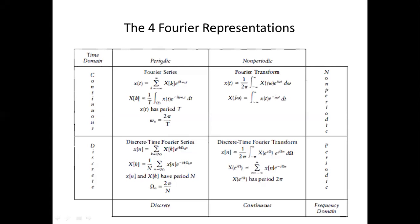Here we can see the topic we have discussed — the Fourier series. For continuous-time periodic signals, we have something called the Fourier series. The Fourier series coefficients represent the signal x(t) as a weighted superposition of complex sinusoids at the fundamental frequency omega-naught and its multiples.